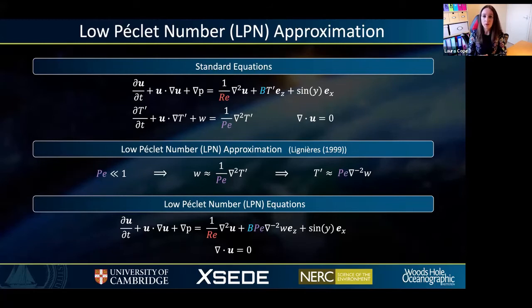This enables us to simplify the original equations into a reduced set of equations known as the low Péclet number equations shown at the bottom of the slide. In this set of equations, we've reduced the number of variables by one by eliminating the temperature fields. This reduced system is now governed by two control parameters: the Reynolds number and the product of the buoyancy parameter B times the Péclet number, BPe.